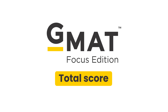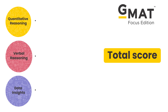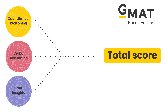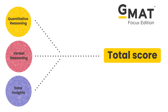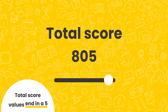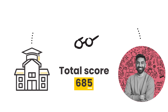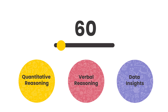Your GMAT Focus Edition Total Score is now calculated based on all three sections of the exam—quantitative reasoning, verbal reasoning, and data insights—with each section equally weighted. The total score scale now ranges from 205 to 805, and all total score values end in a 5. This ensures that both schools and candidates can easily identify a GMAT Focus score. In addition, scores for each section now range from 60 to 90.